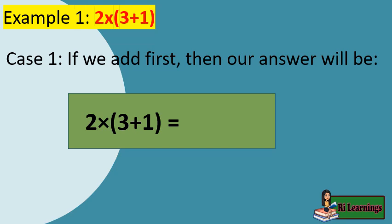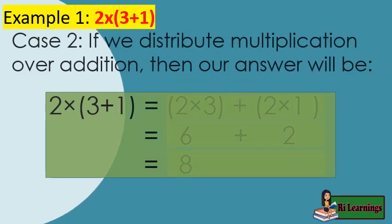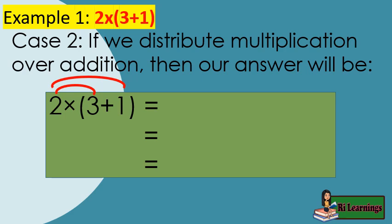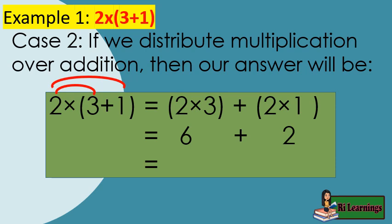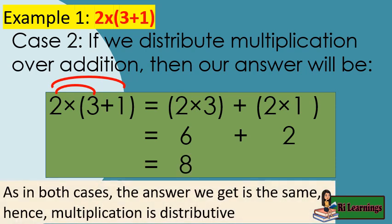Example 1, Case 1: 2 times parenthesis 3 plus 1 close parenthesis. Solving by adding inside the parenthesis first: 3 plus 1 equals 4, then 2 times 4 equals 8. Case 2: distributing multiplication over addition, we multiply each addend by 2 — 2 times 3 plus 2 times 1 — get the products: 6 plus 2 equals 8. In both cases, the answer is the same; hence, multiplication is distributive.